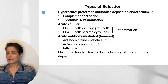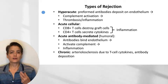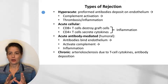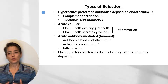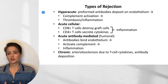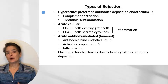In hyperacute rejection, preformed antibodies deposit on the endothelium, causing activation of complement leading to thrombosis, inflammation, and loss of the graft. In acute cellular rejection, CD8-positive T cells destroy the graft cells while CD4-positive T cells secrete cytokines leading to inflammation — this combination causes graft failure without treatment. In acute antibody-mediated, also referred to as humoral rejection, antibodies bind to the endothelium and activate complement leading to inflammation.